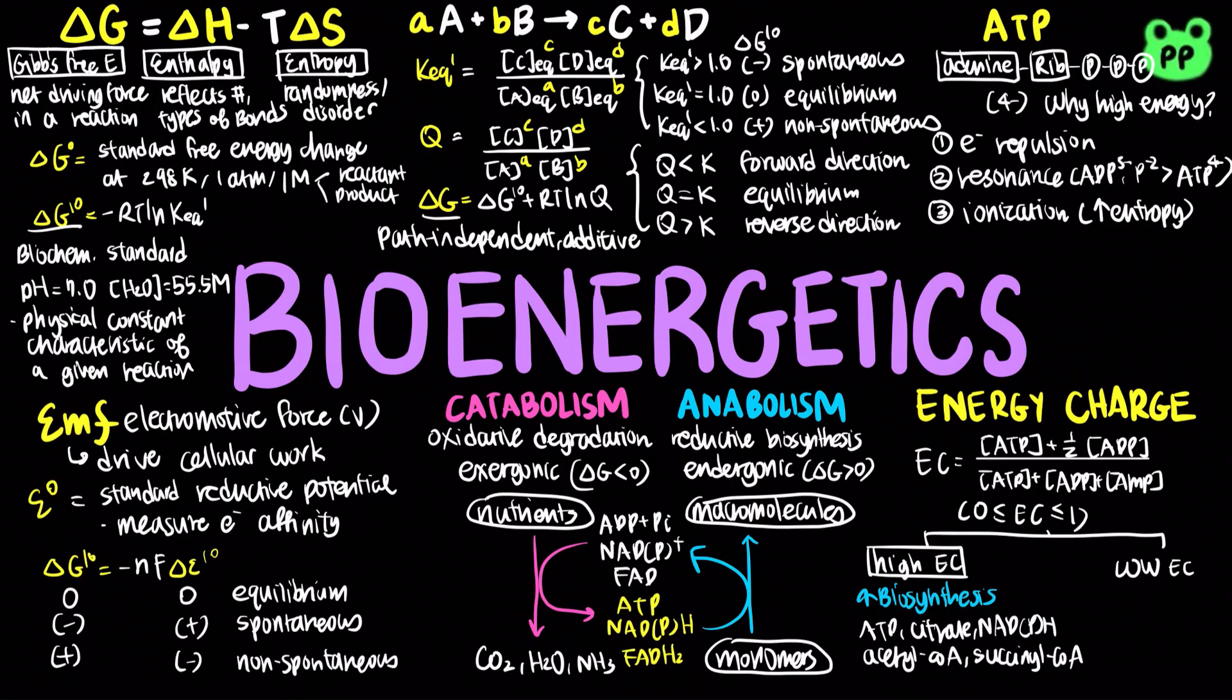On the other hand, a cell with low energy charge does not have a lot of available free energy. Therefore, it will break down more molecules in catabolic reactions in order to release more energy. Low energy charge is indicated by an abundance of ADP, AMP, and NAD.